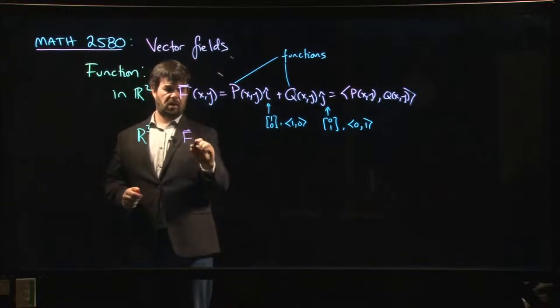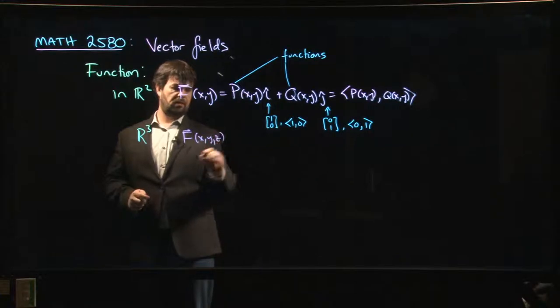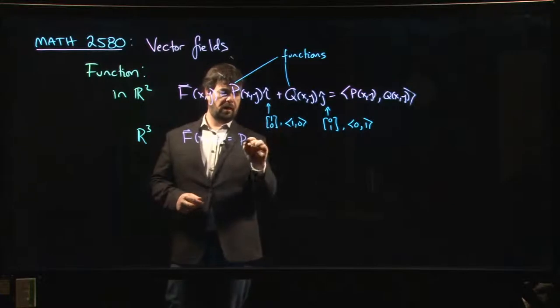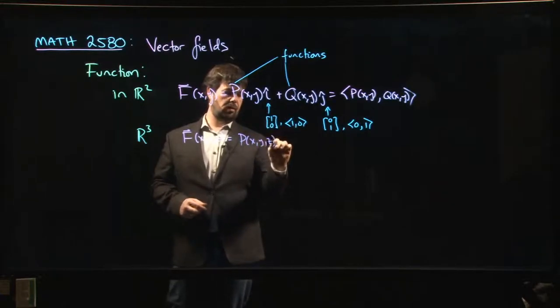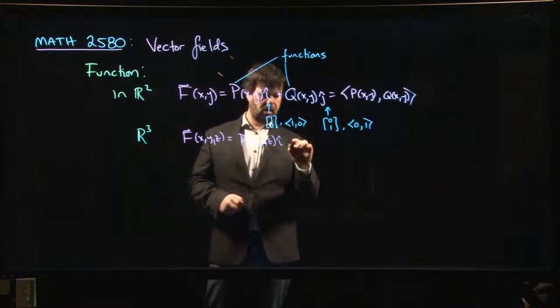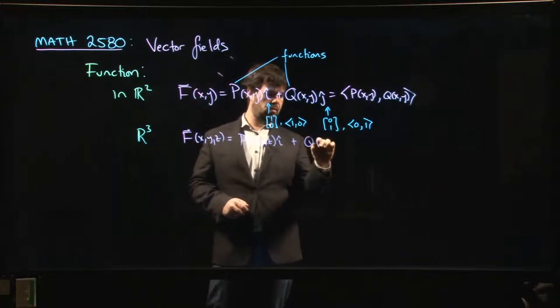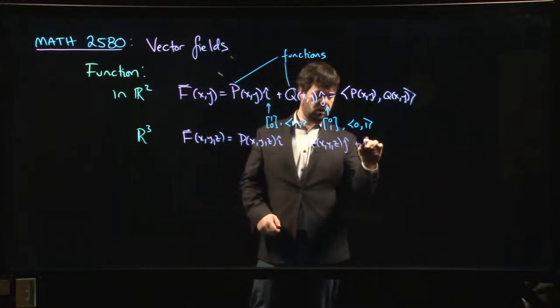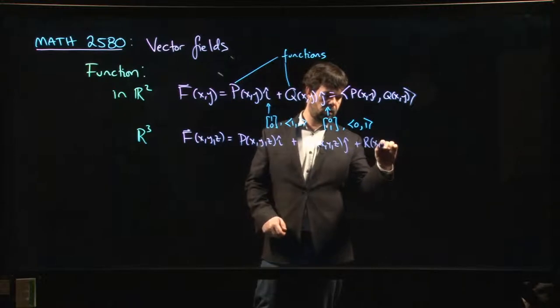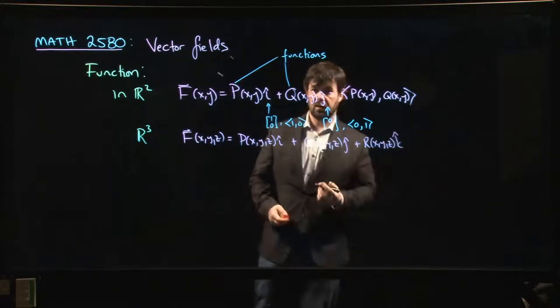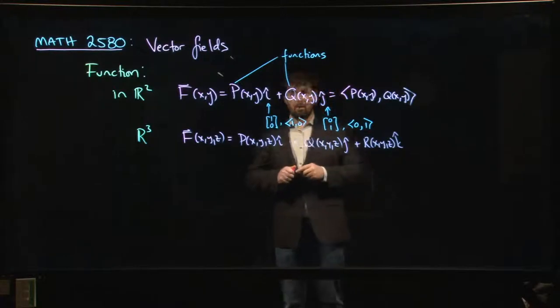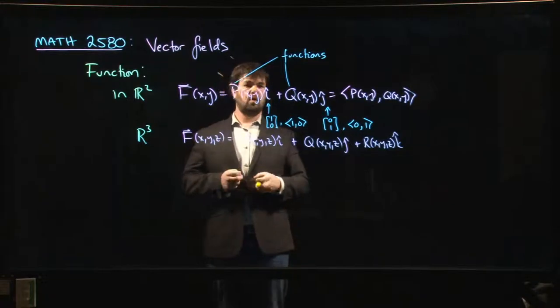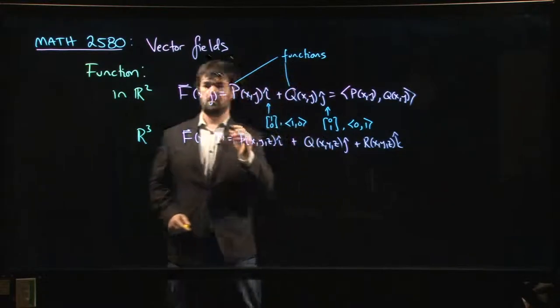Similarly in R³, the same sort of thing except now we're dealing with functions of three variables and vectors which are three-dimensional. So we'll have P(x,y,z) times i, Q(x,y,z) times j, and R(x,y,z) times k.